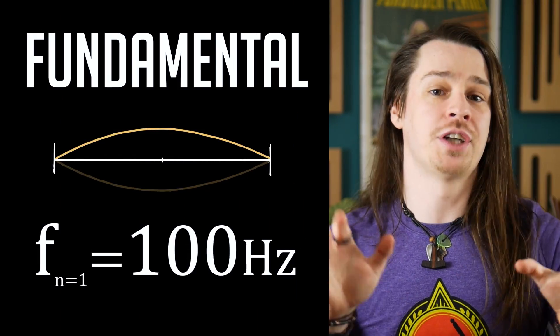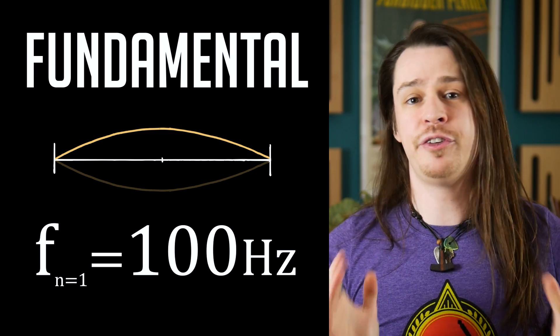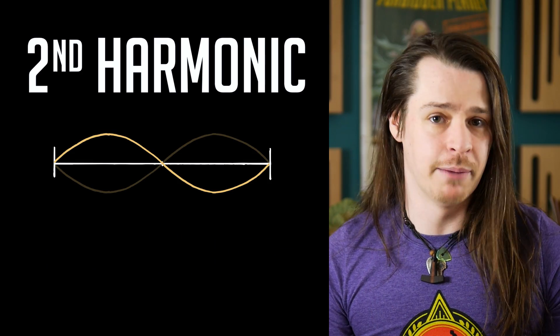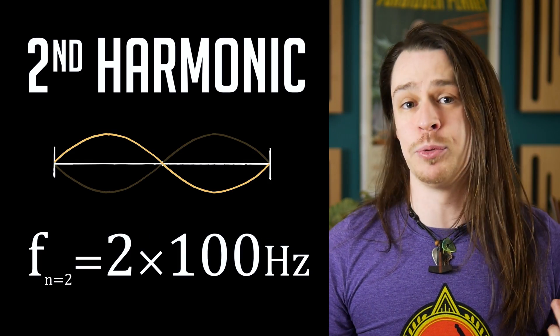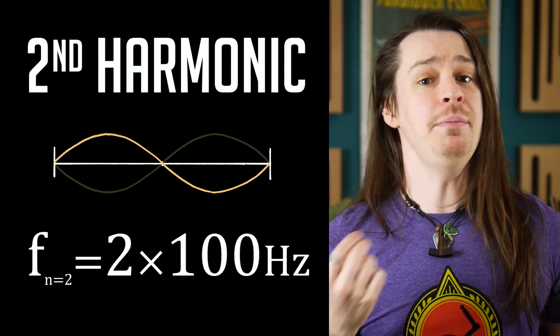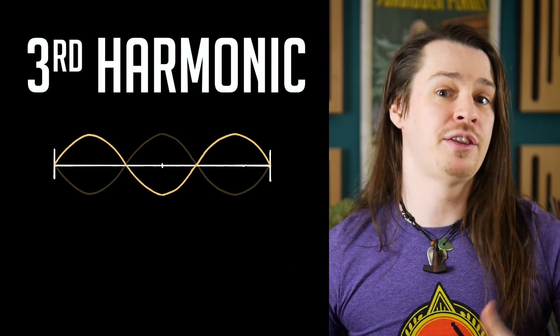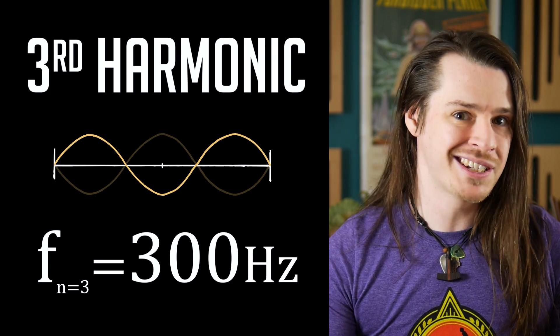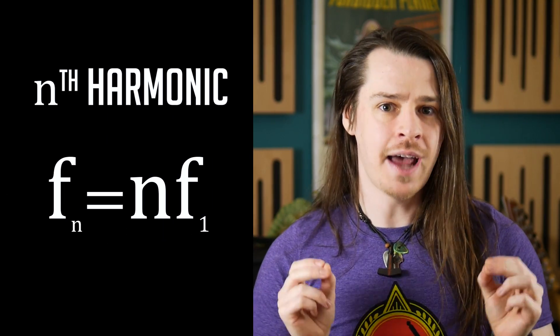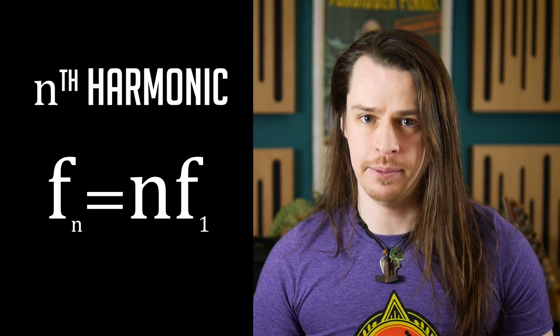If our fundamental frequency was 100 Hz, for example, then the frequency of the second harmonic would be n equals 2 times 100 Hz, which is 200 Hz. The third harmonic would be 300 Hz, and so on. The frequency of the nth harmonic is n times the fundamental frequency.